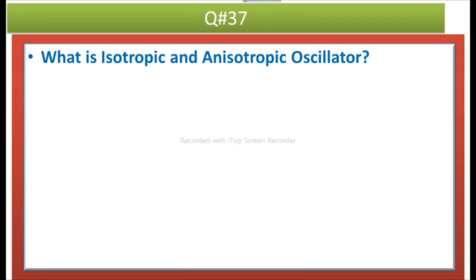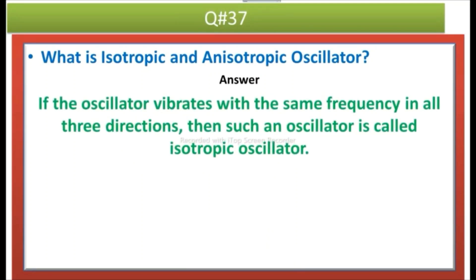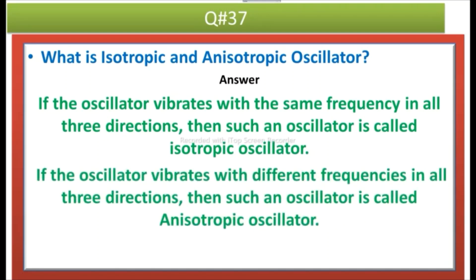The next question is what is ladder operator? Answer is ladder operator is used to push a particle one step either upward or downward. During each step there must be a variation in the energy of the particle which is equal to h-bar omega. The next question is what is isotropic and anisotropic oscillator? Answer is if the oscillator vibrates with the same frequency in all three directions xyz, then such an oscillator is called isotropic oscillator. And if the oscillator vibrates with different frequencies in all three directions, then such an oscillator is called anisotropic oscillator.